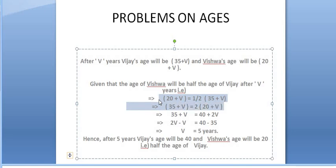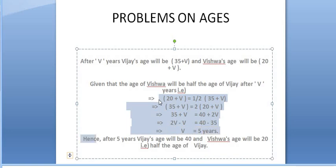50 plus v is equal to 40 plus 2v. If it is 40, v is equal to v. After 5 years.